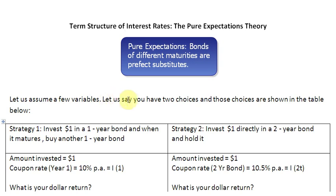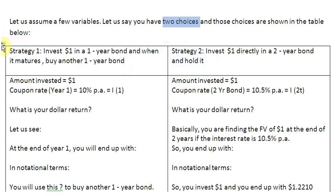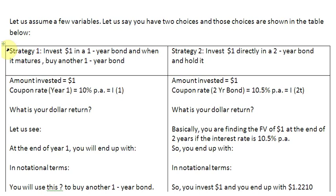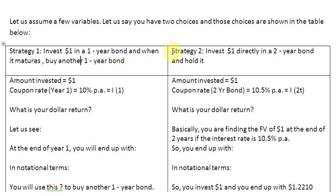Let us say you have two choices, represented in this table here, which has been divided into two columns. In this first column, we are going to focus on strategy number one, which is to invest one dollar in a one-year bond and then, when that bond matures, buy another one-year bond. In the second column, we are going to talk about strategy number two, which is to invest one dollar directly in a two-year bond and hold on to it.